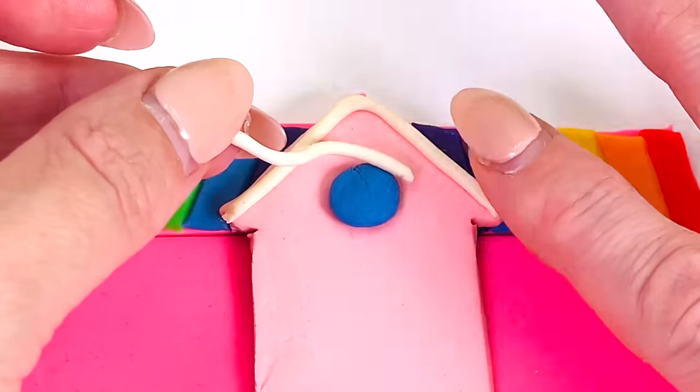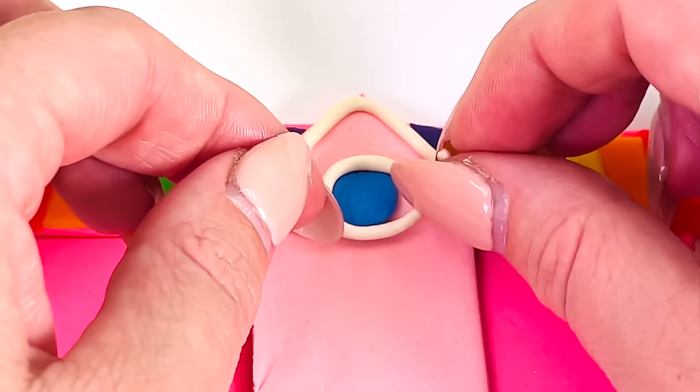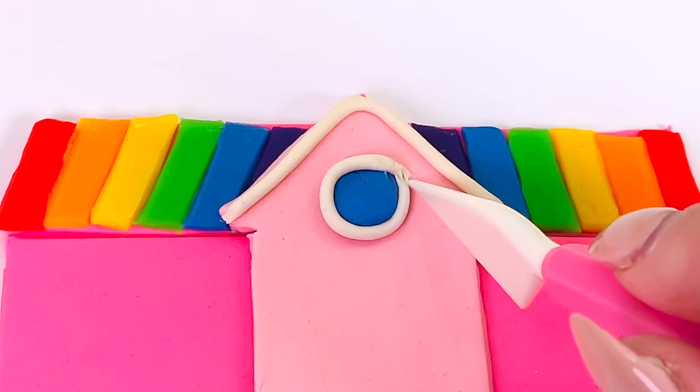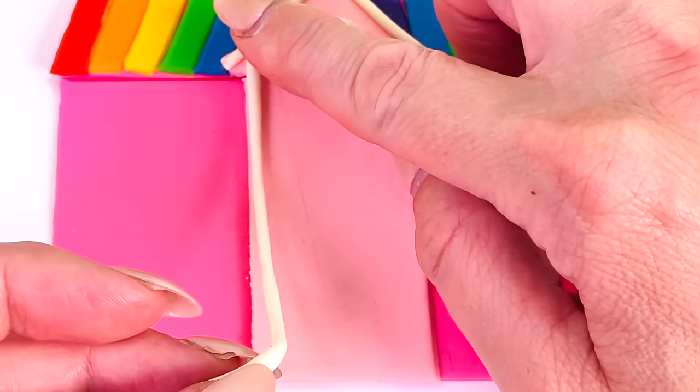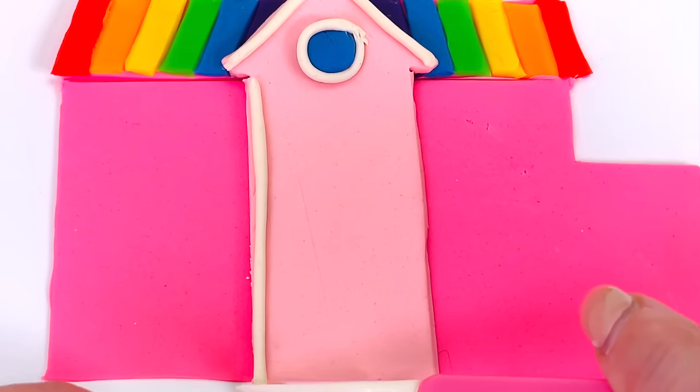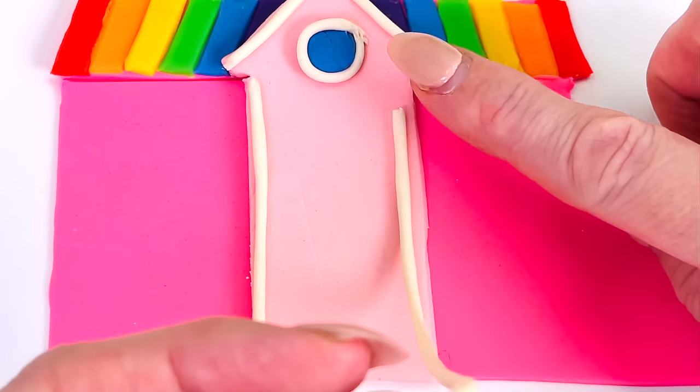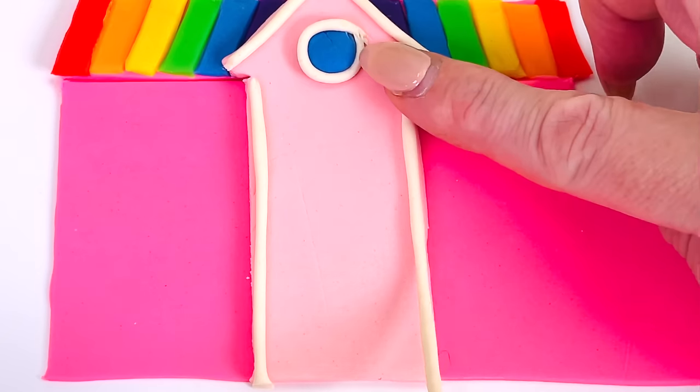There is a circular window at the top. I'm using blue Play-Doh for the glass and white Play-Doh for the detail around the edges. Great. Now I'm just going to put some white down the side on the left, and another long piece down the other side on the right.